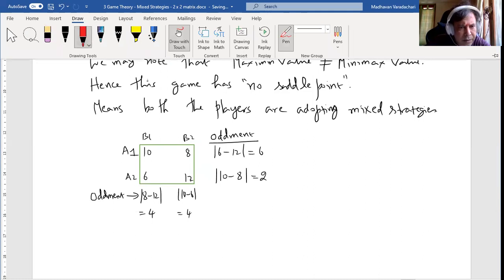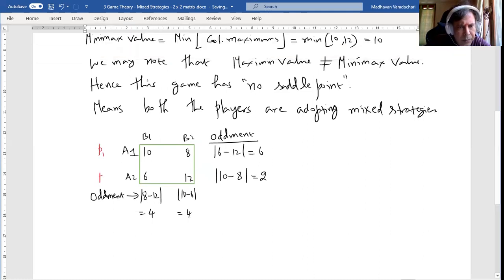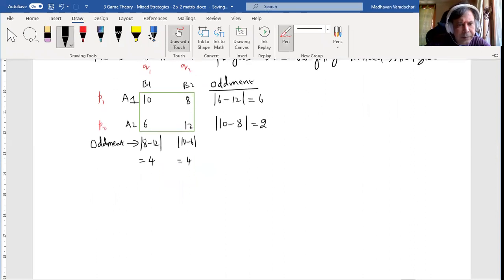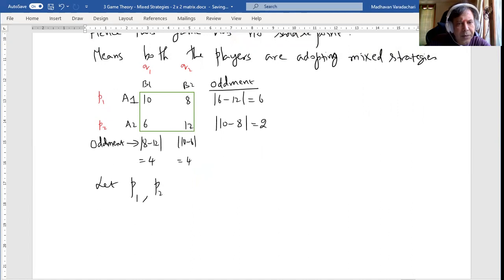Now we'll call this P1, P2, Q1, Q2. What is all this? We'll define that. Let P1, P2 be the probabilities of player A adopting his strategies A1 and A2 respectively.